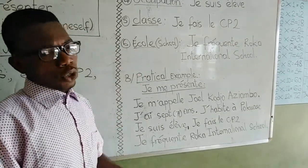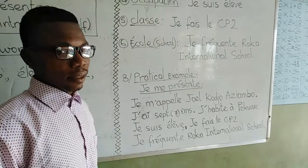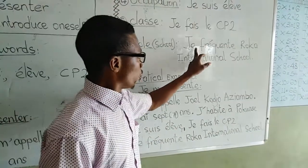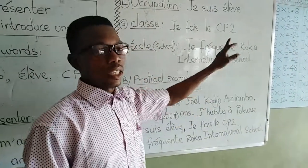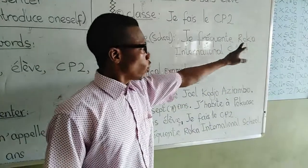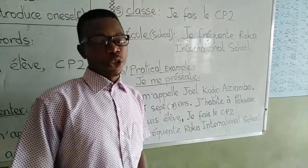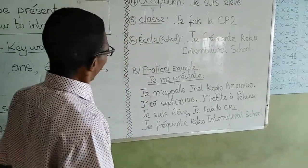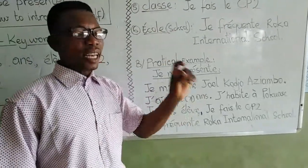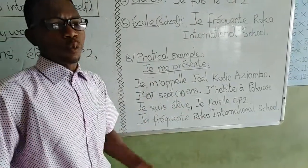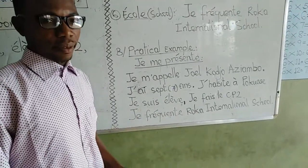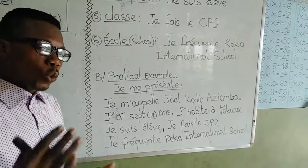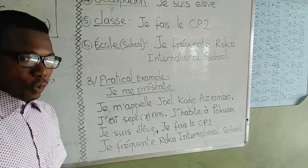The last point is your school — the school that you attend. Tu fréquentes quel école? Je fréquente Roca International School. That's great. Now, this is all that you need — six points, six lines. Let's move to a practical example of how to introduce yourself. You follow my example, copy it, and send it to me as your assignment activity.